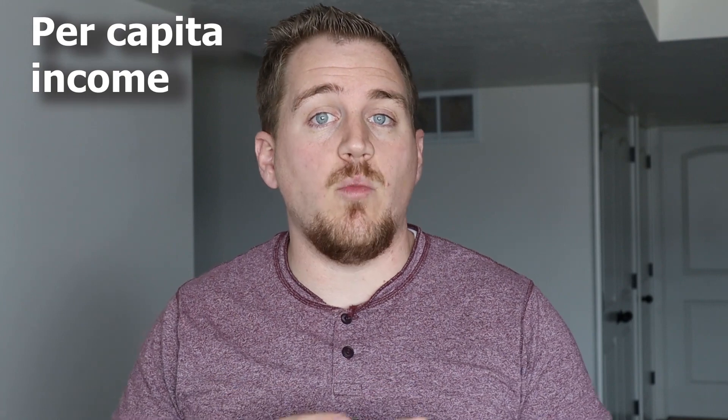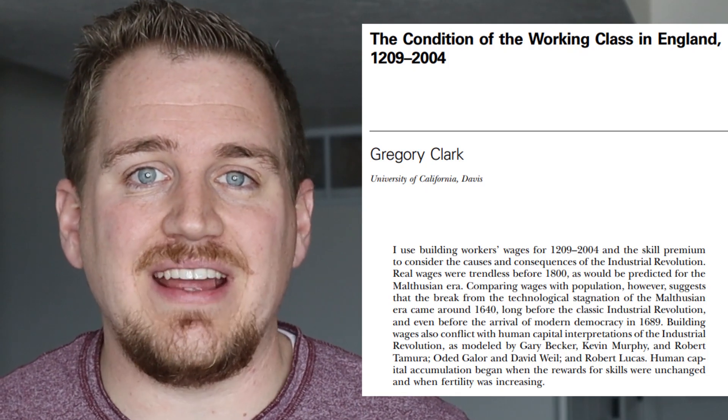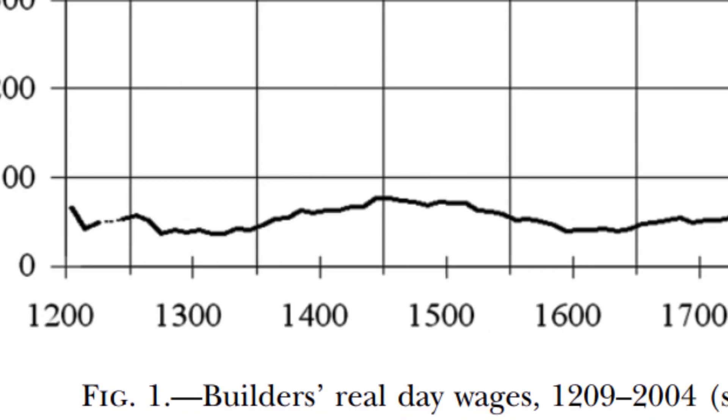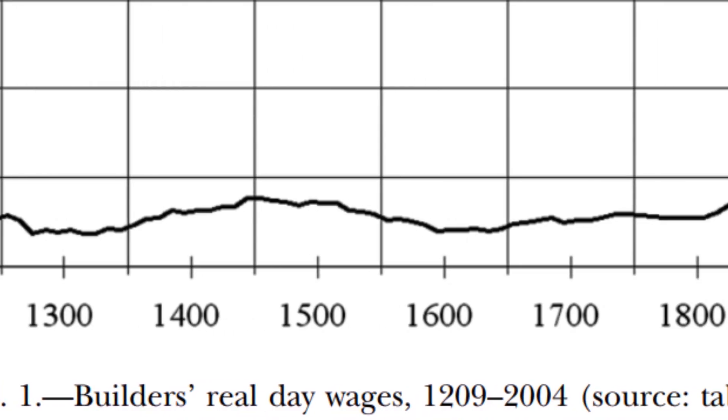Do we have any evidence that the Malthusian model is true? Well, one of the predictions of the Malthusian model is that per capita income will remain constant, or at least fluctuate around a constant. That's because as incomes grow, population will grow and drop those per capita incomes. This prediction was confirmed by economist Greg Clark. He collected data on wages for English builders since the year 1209, and consistent with the prediction, wages remained constant for centuries.